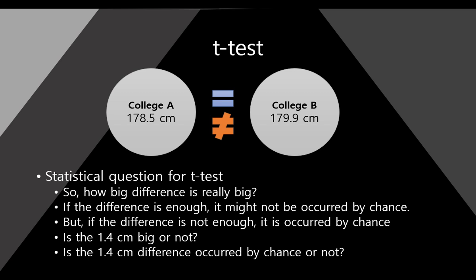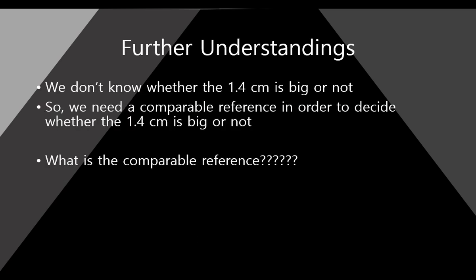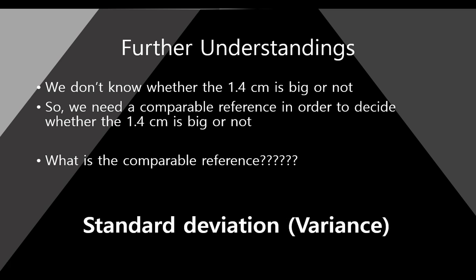Is the 1.4 cm difference occurred by chance? What is the probability? That is our question. We have a 1.4 cm mean difference, but we don't know if this number is big or not. So we need a comparable reference number in order to decide if this difference, 1.4, is big or not. We cannot compare with just one absolute number. So what is that comparable reference? That is standard deviation or variance.